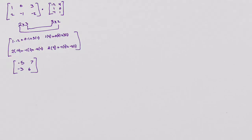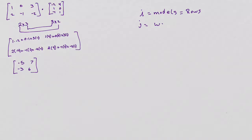So let's just dive right into it. I'm going to work number 34 in your packet. It reads: a manufacturer of electronics produces three models of portable cell phone chargers, which are shipped to two warehouses. The number of units of model I — so right off the bat, I is my models, and my rows — that are shipped to warehouse J. So J represents warehouses, and those are my columns.